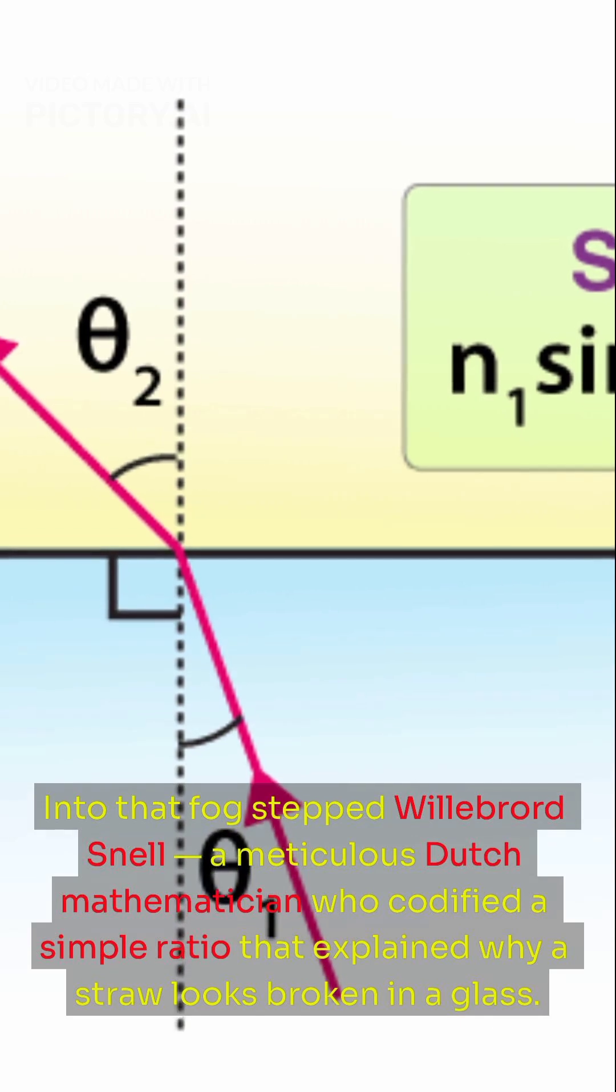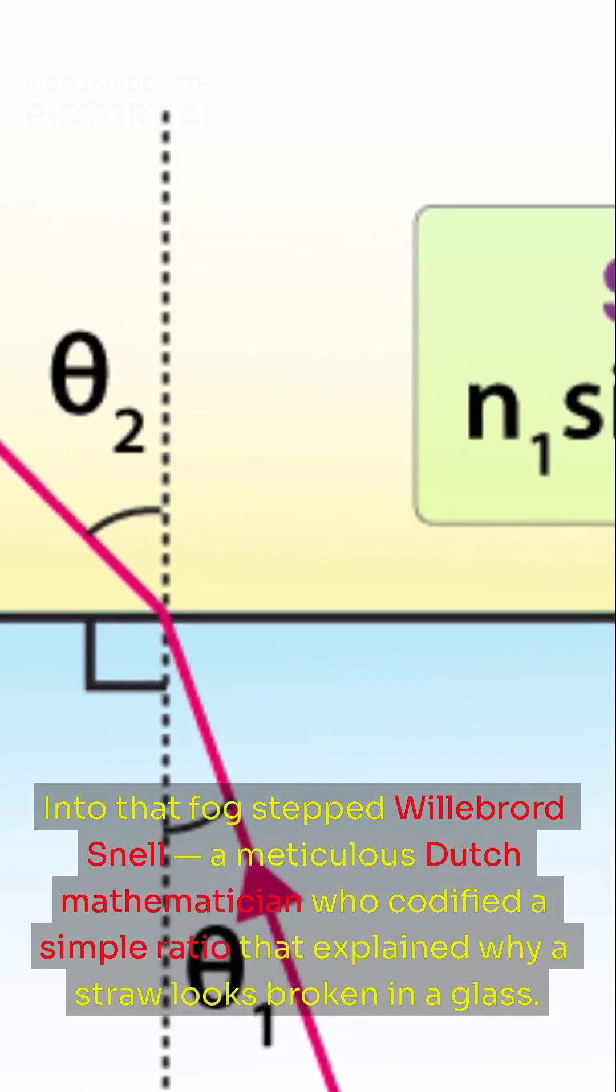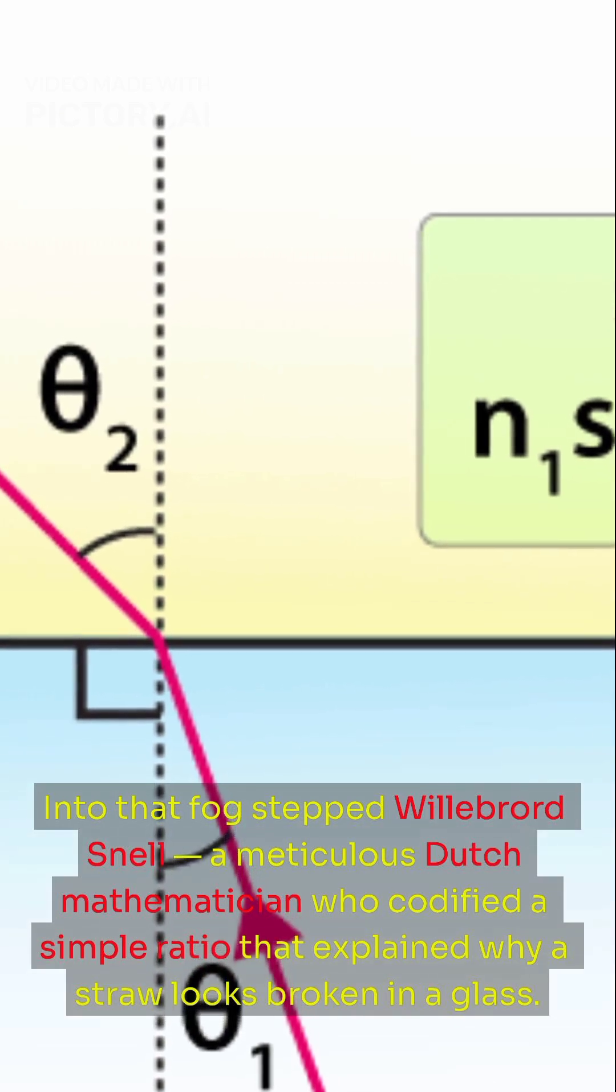Into that fog stepped Willebrod Snell, a meticulous Dutch mathematician who codified a simple ratio that explained why a straw looks broken in a glass.